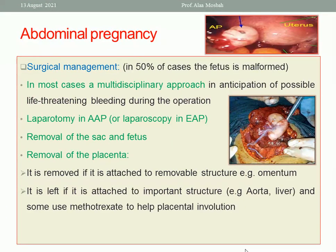Surgical management in most cases requires a multidisciplinary approach in anticipation of life-threatening bleeding during surgery. Laparoscopy or laparotomy can be performed — laparotomy is preferred for advanced abdominal pregnancy. The fetus is removed, and the placenta is removed if attached to a removable structure such as the omentum. If the placenta is attached to an important structure like the aorta or liver, methotrexate is given to allow placental involution.